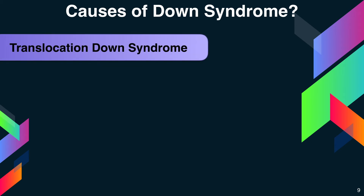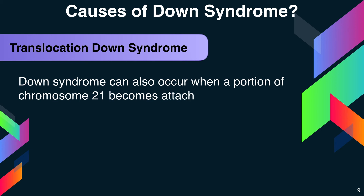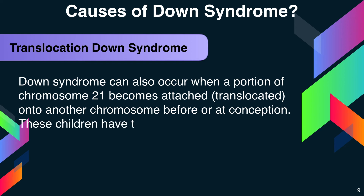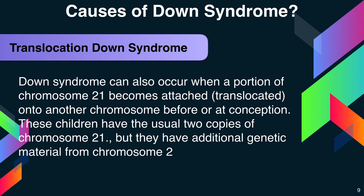The third is Translocation Down syndrome. Down syndrome can also occur when a portion of chromosome 21 becomes attached or translocated onto another chromosome before or at conception. These children have the usual two copies of chromosome 21, but they also have additional genetic material from chromosome 21 attached to another chromosome.